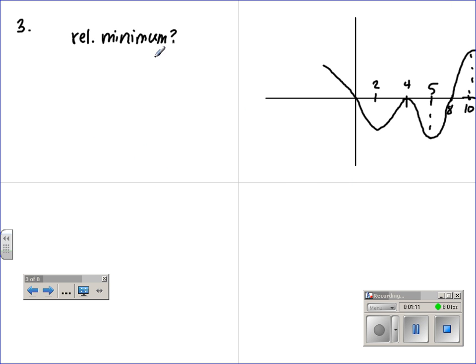Relative minimum. Okay, so this is talking about f prime needs to equal 0 and change, or DNE, and change from negative to positive. We're thinking about making our number line here. Our critical numbers would be 0, 4, and 8, because those are the zeros of f prime.